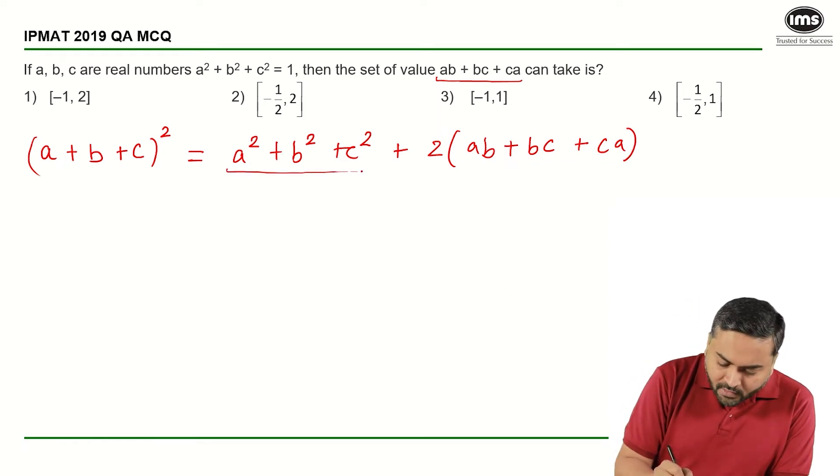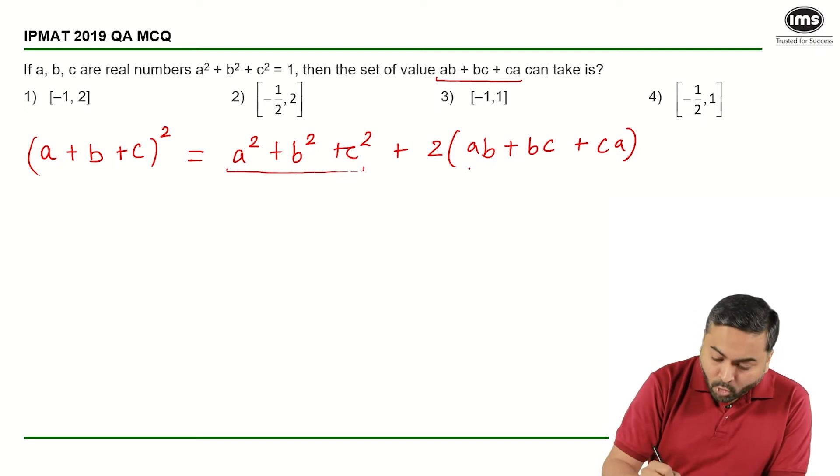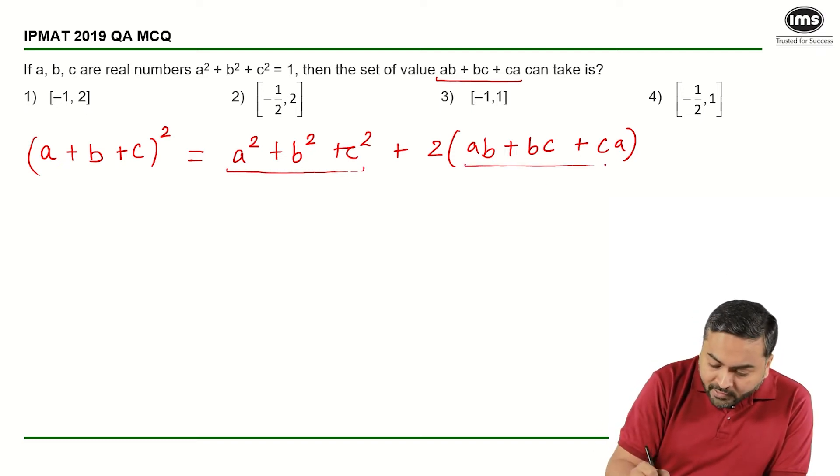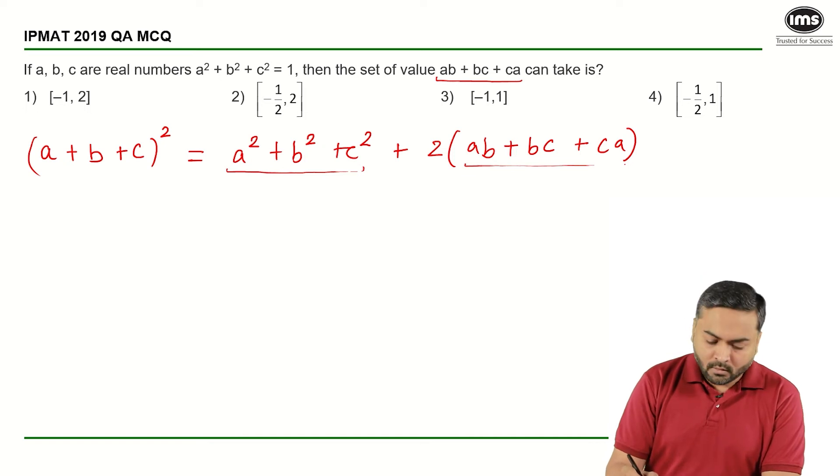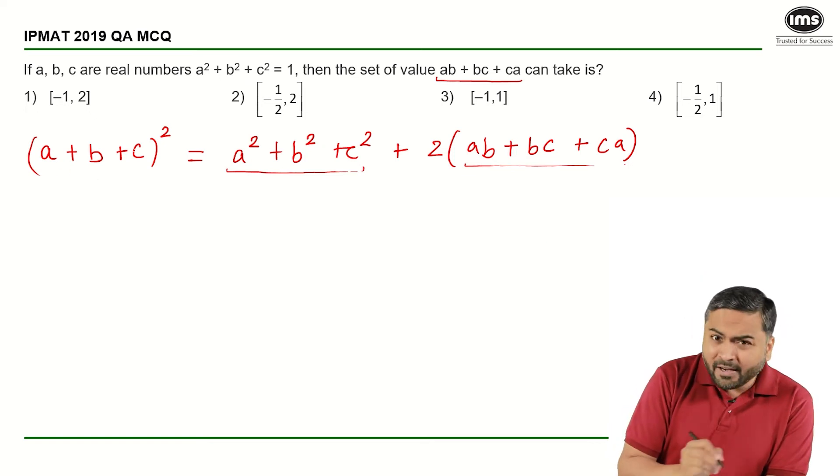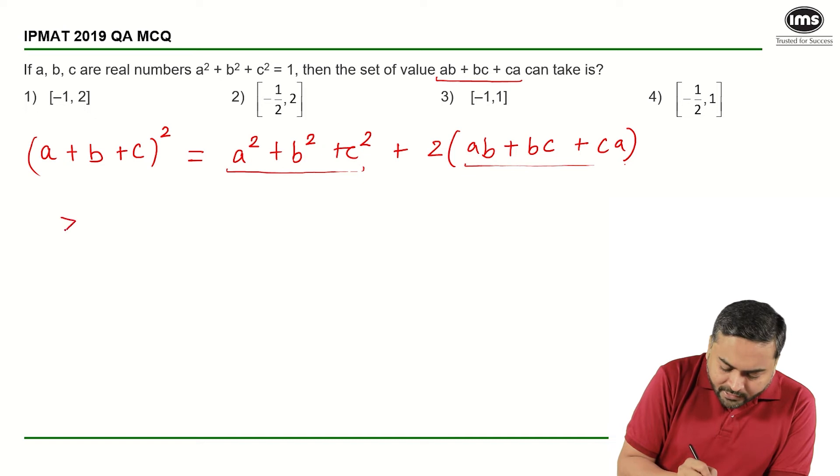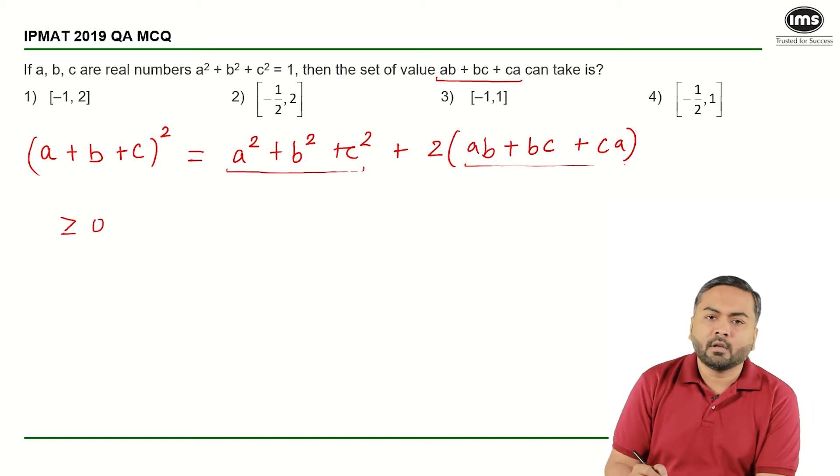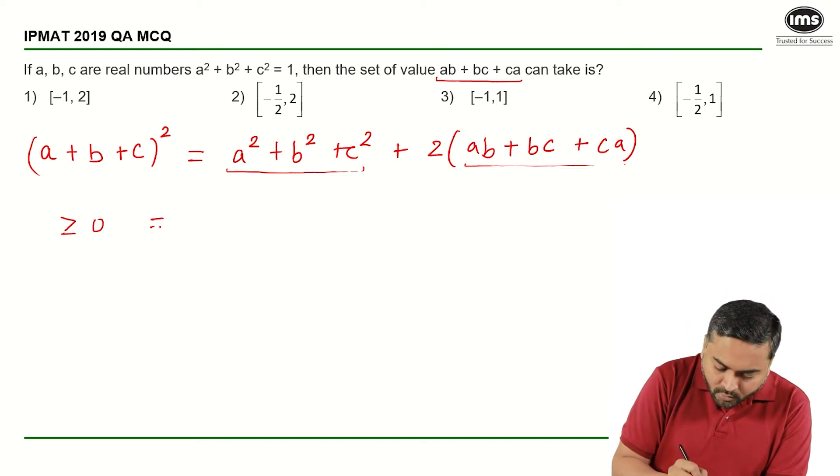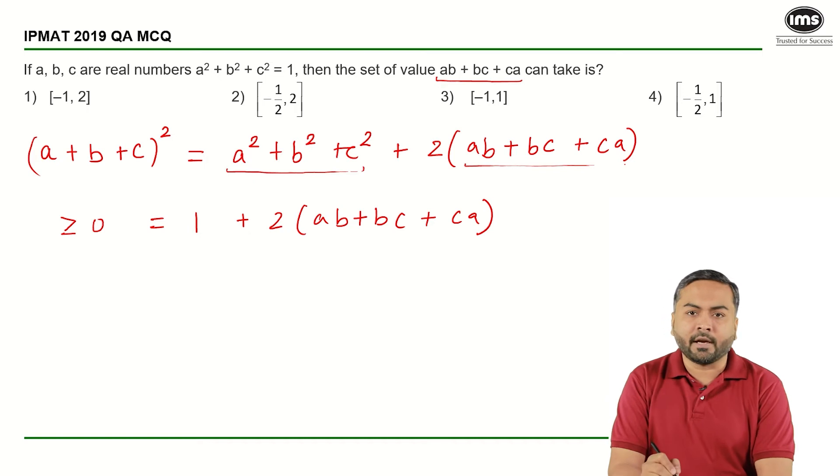This is equal to 1 that is given to me and I want to try to find out this value. Now, I know my left hand side will always be greater than or equal to 0. The left hand side will always be ≥ 0, it is a perfect square = 1 + 2(AB + BC + CA).